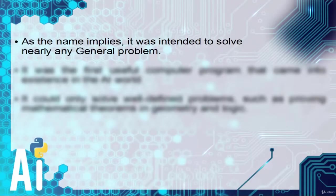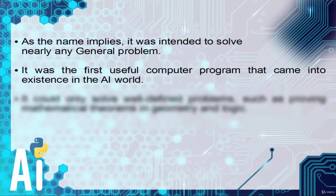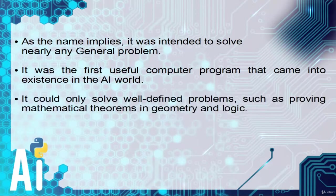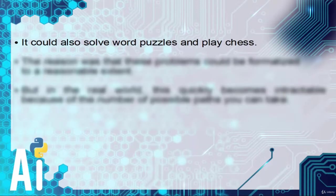As the name implies, general problem solver, it was intended to solve nearly any general problem. It was the first useful computer program that came into existence in the artificial intelligence world. It could only solve well-defined problems such as proving mathematical theorems in geometry and logic. It could also solve word puzzles and play chess.